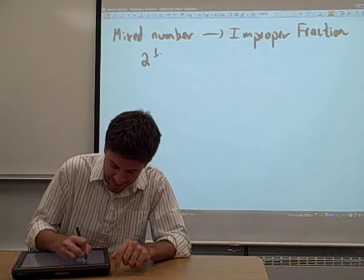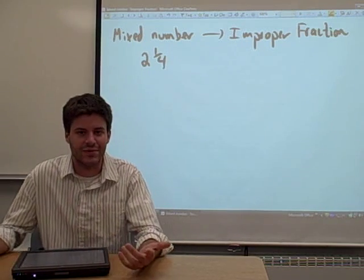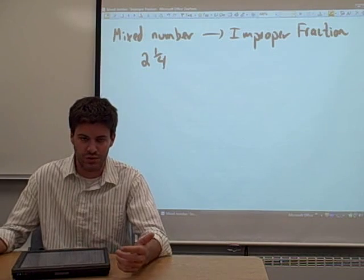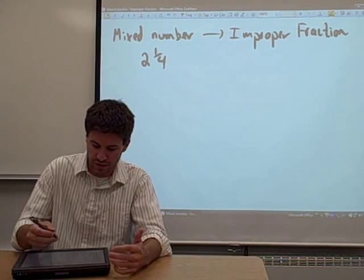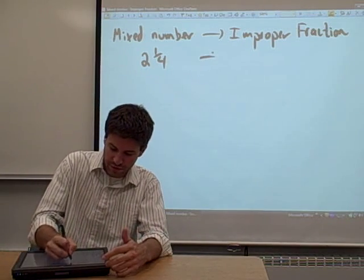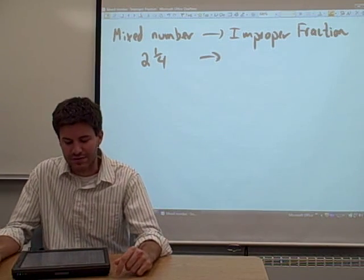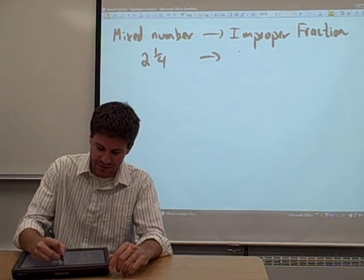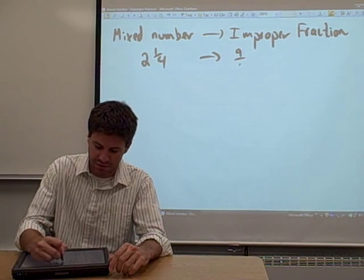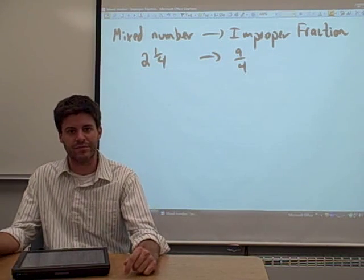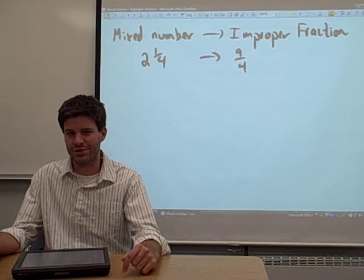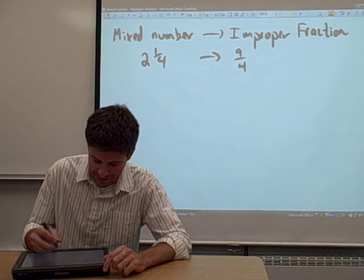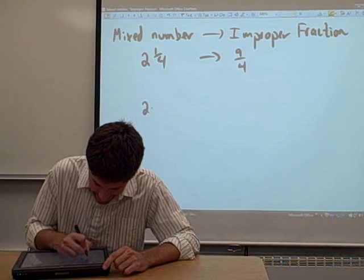In this first part, we're going to take a mixed number — maybe something like 2 and 1 quarter, 2 and 1 fourth — and we're going to convert that into an improper fraction. In this case, it's just going to be 9 fourths. But you might be wondering how I actually did that, so let's talk about it.